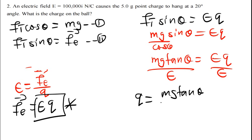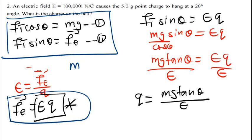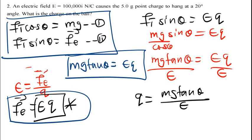From combining the two equations, we arrive at mg tan theta equals Eq. This formula is very versatile — you can find mass, electric field, charge q, or even electric force depending on what is given. As long as you reach this point, identify what is missing and substitute the known values.